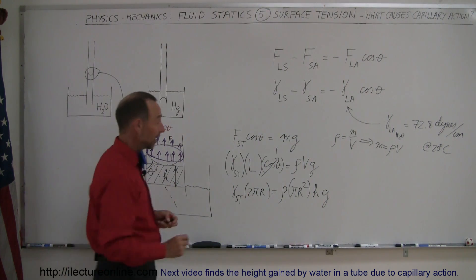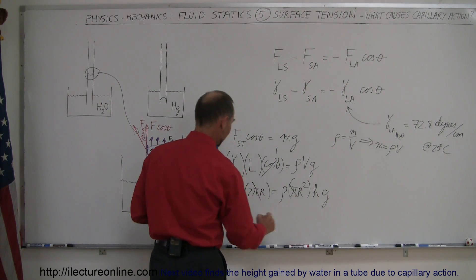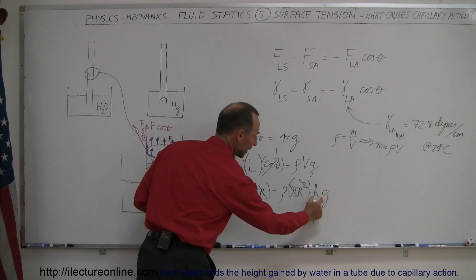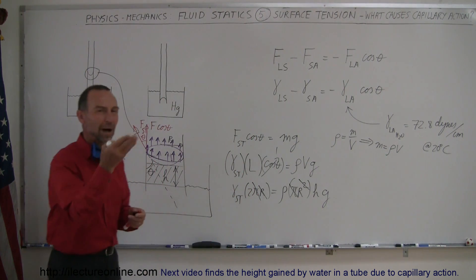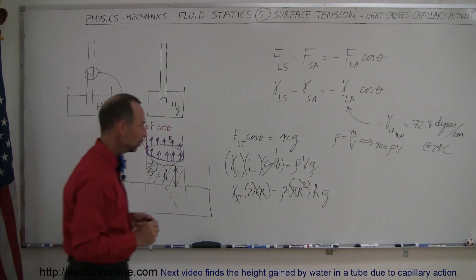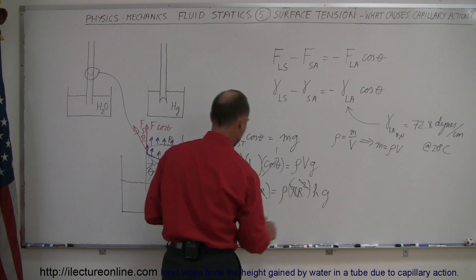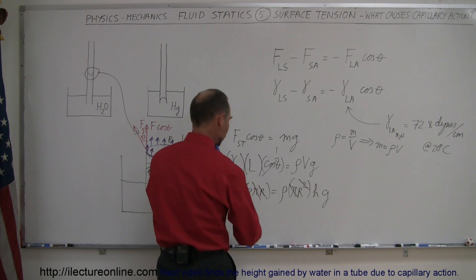Now notice that we have a pi on both sides of the equation. That cancels out. We have an r here and an r squared there. That cancels out. And we want to calculate the height. We want to find out how high the water will rise in the tube. So if we divide both sides by rho, r, and g, then we get, and turn the equation around,